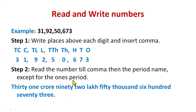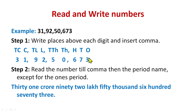There is an exception for the ones period — we do not say '673 ones.' Instead, we just read the last group as a plain number. So the full reading is: 31 crore, 92 lakh, 50,673.